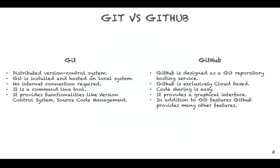Unlike Git, GitHub is exclusively hosted on a cloud platform. Since GitHub is hosted on a cloud platform, sharing of code becomes way easier. GitHub also provides a graphical interface for the user, so it becomes easier for users who are not familiar with a command line tool. In addition, GitHub also provides many additional features on top of Git.